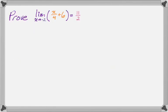We want to prove that the limit as x approaches negative 2 of the quantity x over 4 plus 6 is equal to 11 halves. So we're trying to prove this.